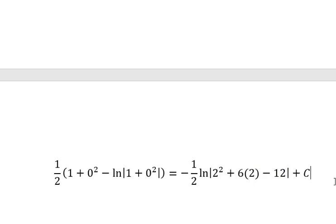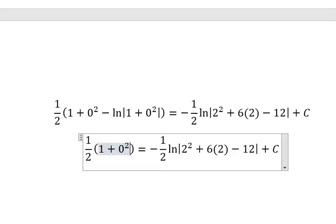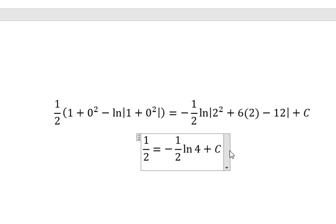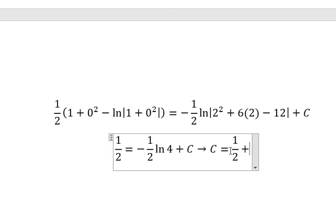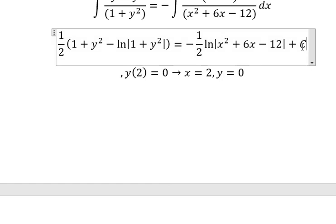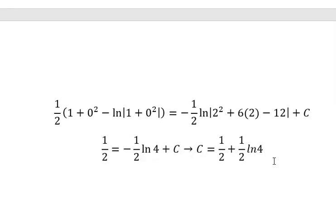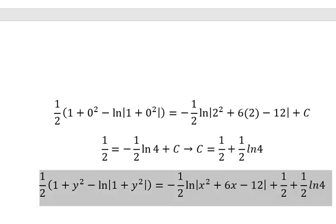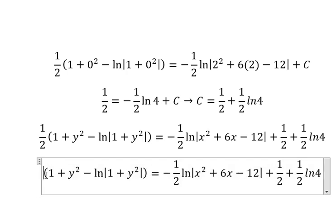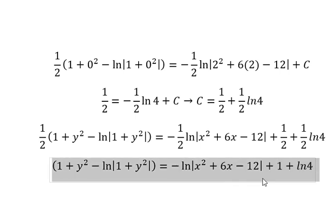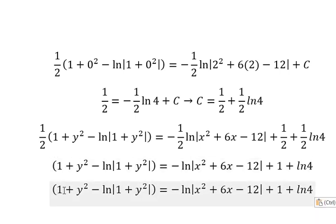If we simplify: this one we have number 0, this one we have number 0, and this one we have 1 over 2, this one we have number 4. Now we have c equals to 1 over 2 plus 1 over 2 times ln of number 4. We put this back in here, and then we simplify 1 over 2 for both sides — number 1 and number 1 we simplify.